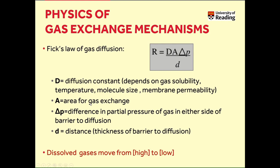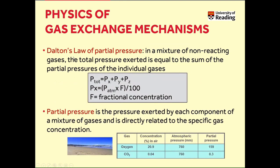Remember, the alveoli occupy a very vast surface area. Diffusion is also proportional to the difference in partial pressure of gas on either side of the barrier to diffusion, and inversely proportional to the distance — the thickness of the barrier to diffusion. The second law to remember is Dalton's law of partial pressure, which allows you to calculate the partial pressure of gases and states that in a mixture of non-reactive gases, the total pressure exerted is equal to the sum of partial pressures of the individual gases.